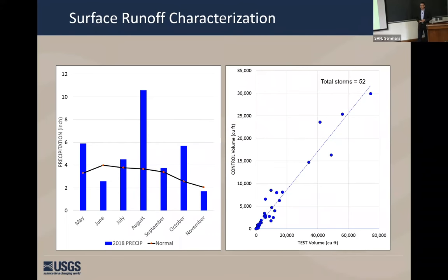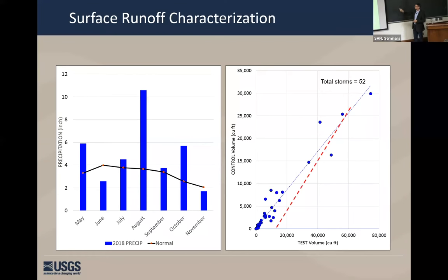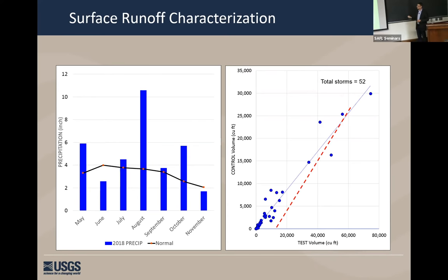Here we're looking at the hydrologic response from last year — May through November of 2018 — with over 52 storms. On the left, monthly precipitation totals with the black line representing the 30-year normal; it was a pretty wet year, far over normal particularly for August. On the right, we see the relationship being developed between our control and test — a nice super linear line. It allows us to detect smaller changes because our uncertainty is small between our two catchments. Next year when those trees are gone, I expect to see that relationship shift, because the test catchment will have more runoff while the control won't have responded yet, and I can quantify that difference.